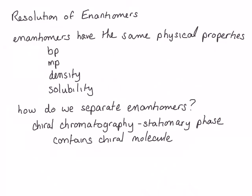Another way that we can obtain a single enantiomer is from a biological source. Biological systems are chiral, and oftentimes only produce a single enantiomer, rather than a racemic mixture, like a lot of organic syntheses do.